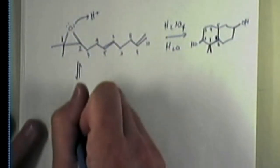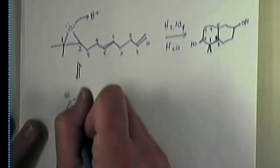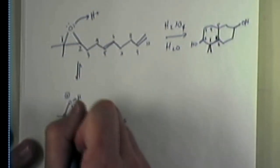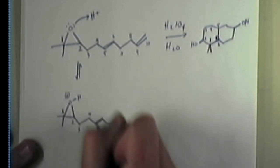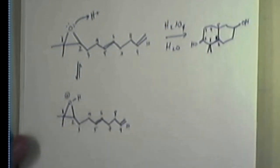And so the first mechanistic step is going to be that this guy comes out and grabs a proton. So that's going to give me this type of intermediate. I've got, once again, carbon-1, two, three, four, five, six, seven, eight, nine, ten.